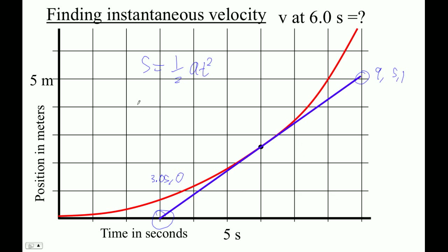I can just go y minus y over x minus x, right? So five point one minus zero divided by nine minus three point zero five. And obviously there's got to be room for interpretation here, right? There's not one right answer.